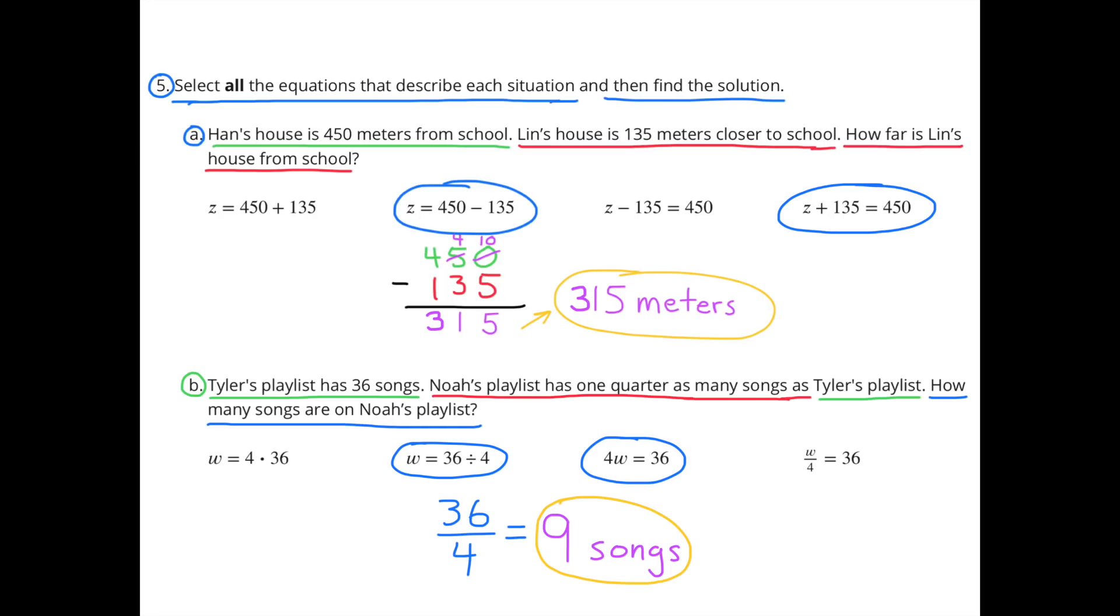Number 5. Select all the equations that describe each situation and then find the solution. A. Hans' house is 450 meters from school. Lynn's house is 135 meters closer to school.